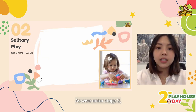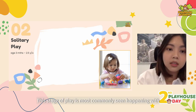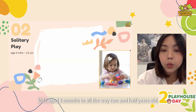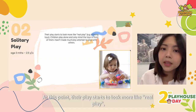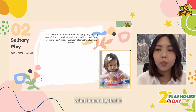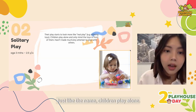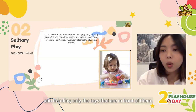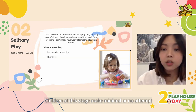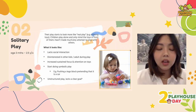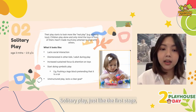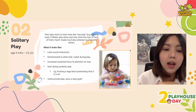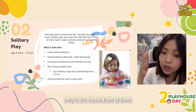As we enter stage two, solitary play — this stage is most commonly seen happening with kids aged three months all the way to two and a half years old. At this point, their play starts to look a lot more like real play. They're starting to utilize the toys and how they're designed. Just like the name, the children play alone and mind only the toys that are in front of them. Children at this stage make minimal to no attempts to interact or play with other kids. Solitary play still lacks social interaction and there's still a disinterest in other humans, but there is an increase in sustained focus and attention — though only to the toys in front of them. They're also starting to do symbolic play, but their play still looks very unstructured and lacks a clear goal.